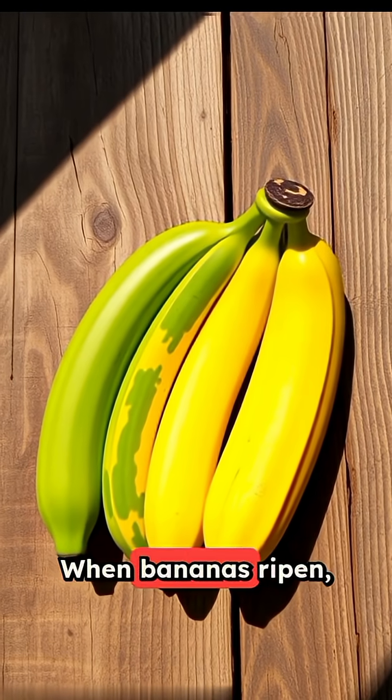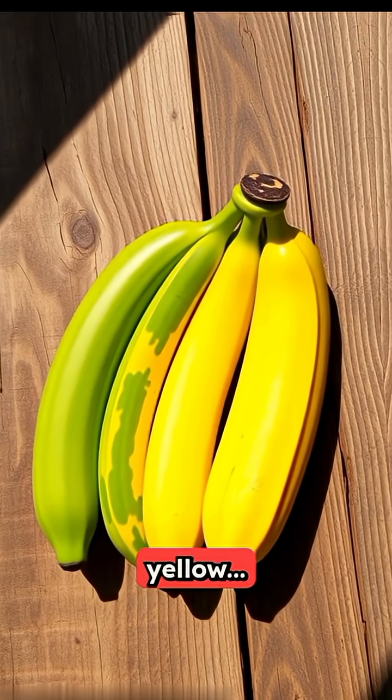Here's the wild truth. When bananas ripen, their skin turns yellow, but under a UV or black light, they glow a freaky glowing blue.